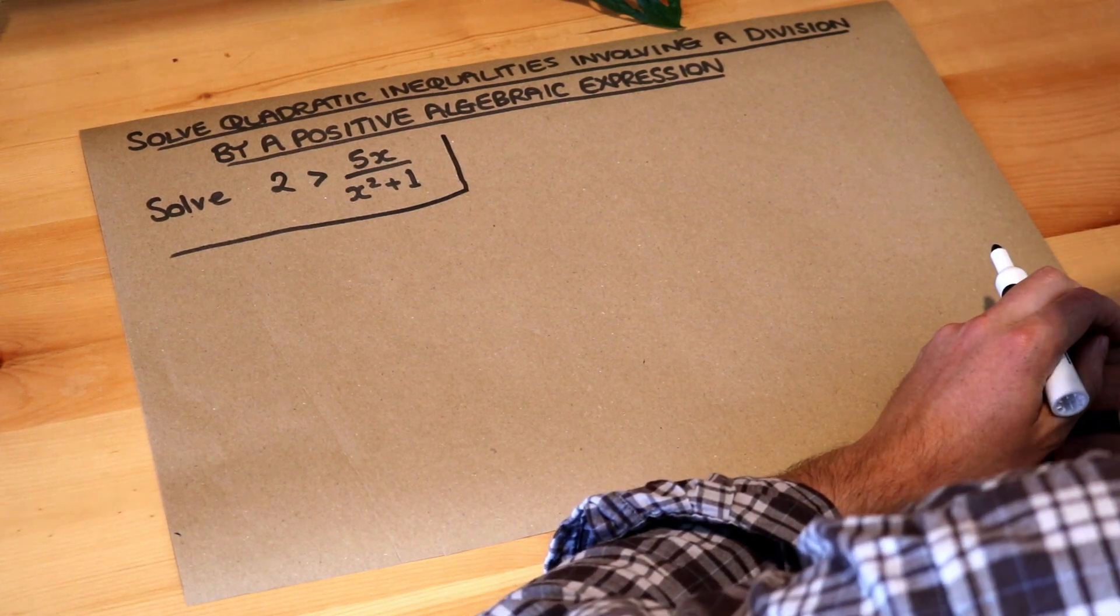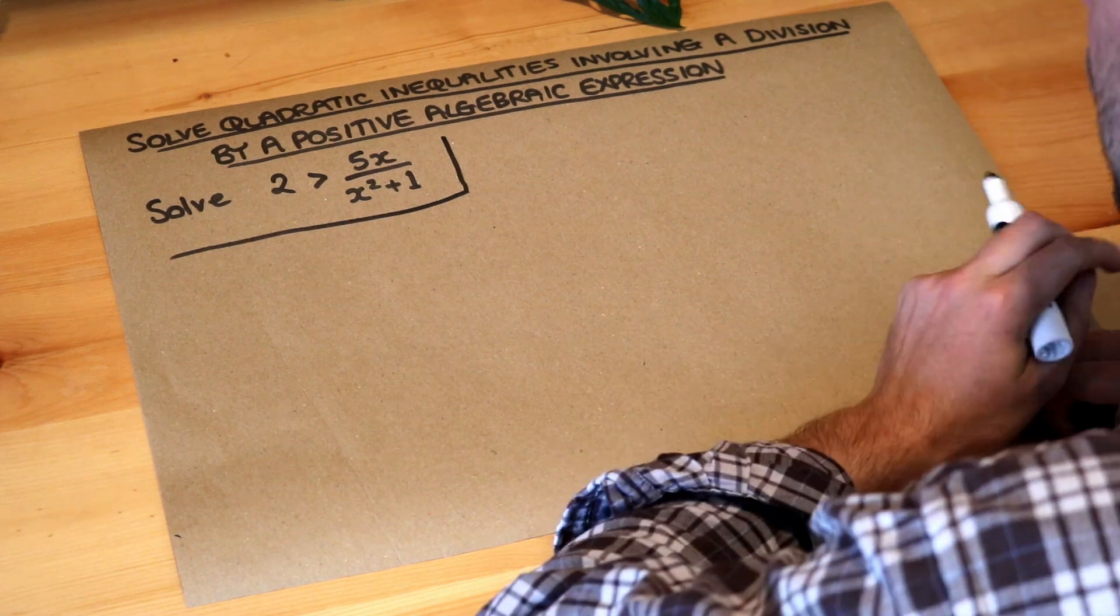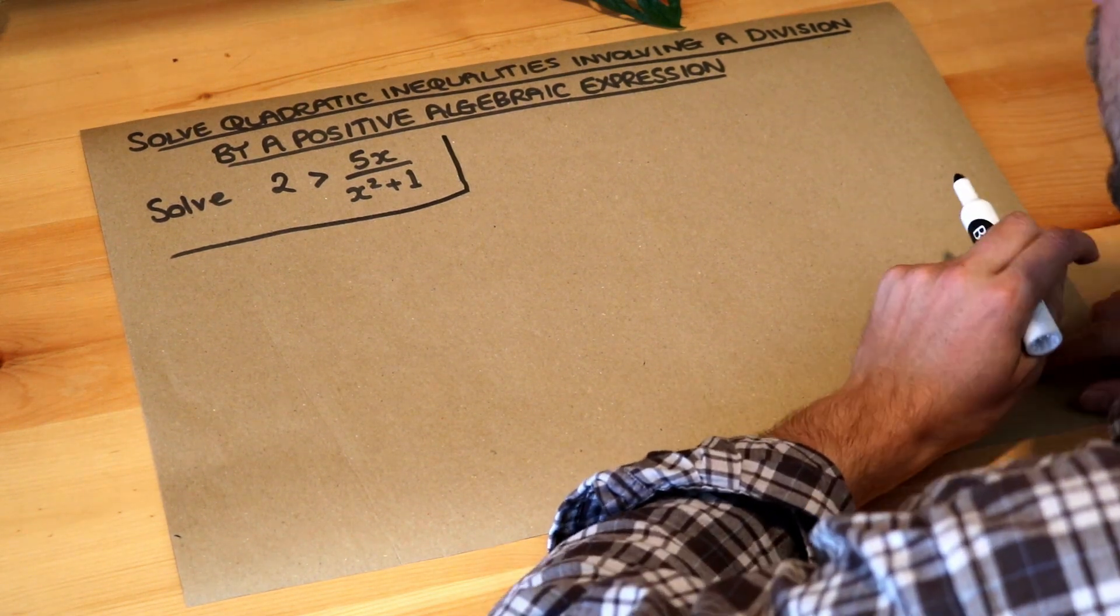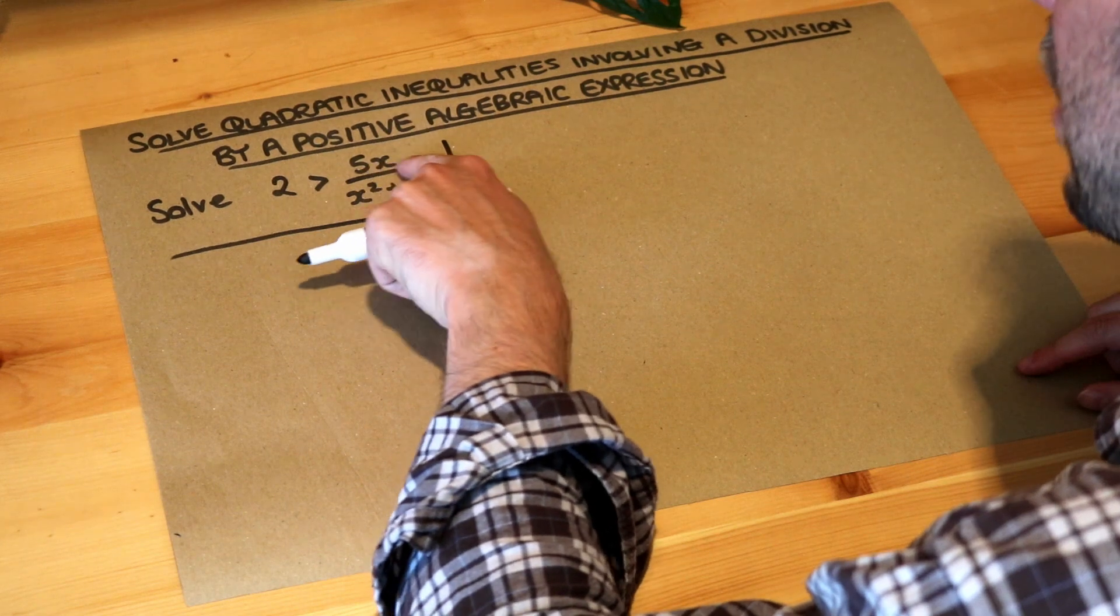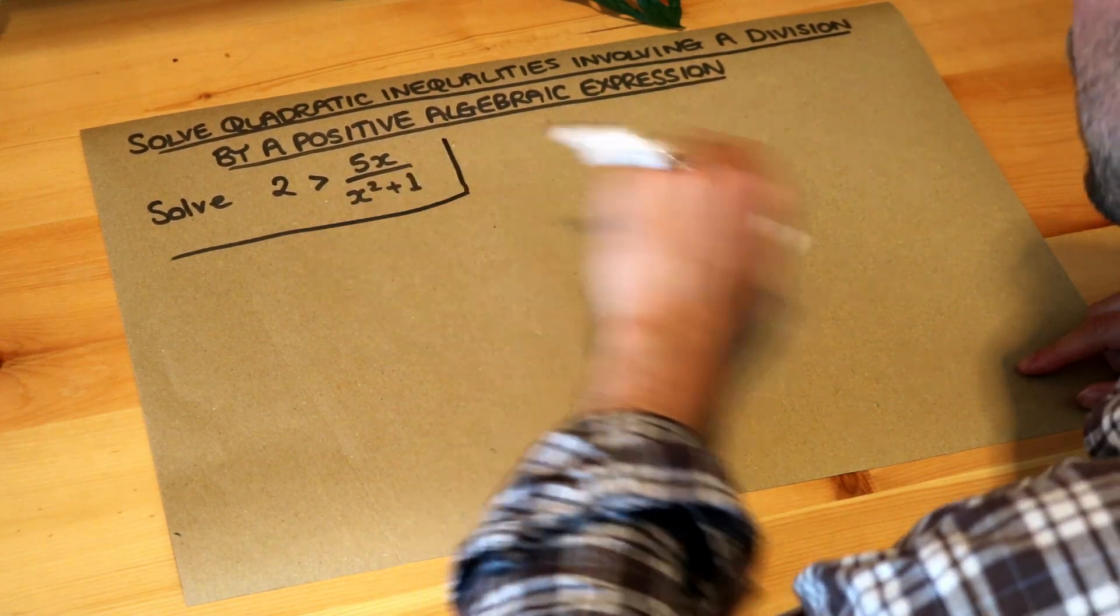Hello and welcome to this Dr Frost video on solving quadratic inequalities involving a division by a positive algebraic expression. So we've got this algebraic expression and we've got this division, this fraction involving a division by x squared plus one. It's an algebraic expression, isn't it?